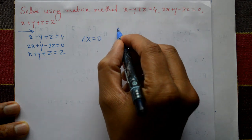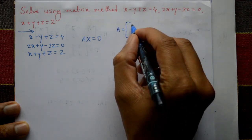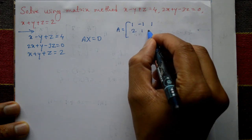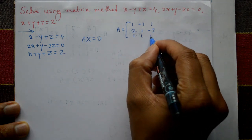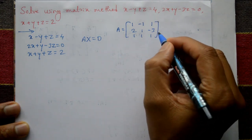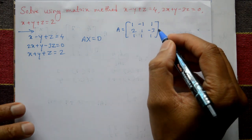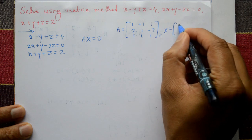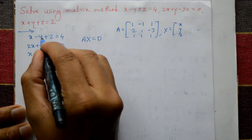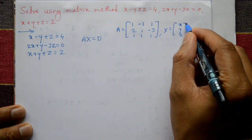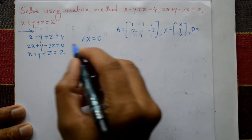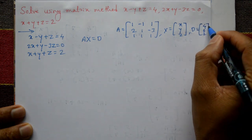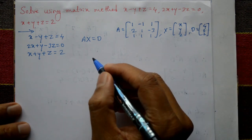So matrix A equals the 3×3 matrix with rows [1, -1, 1], [2, 1, -3], [1, 1, 1]. The variable matrix X contains the column variables x, y, z. And D is the column matrix equal to 4, 0, 2.